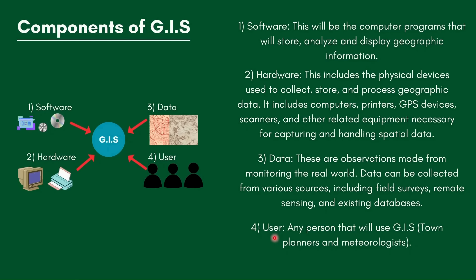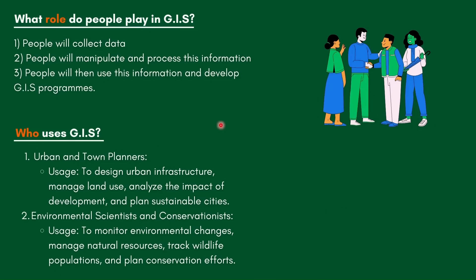The fourth component is the user — any person who uses GIS. Two examples are town planners and meteorologists. A very common question is what role will people play in GIS. There are four possible options: people will collect data, manipulate and process information, use the information, and develop GIS programs. The best answer to give is that people will manipulate and process this information.